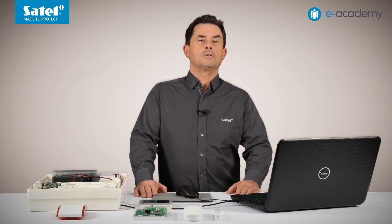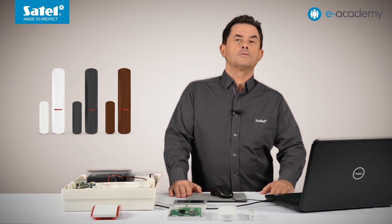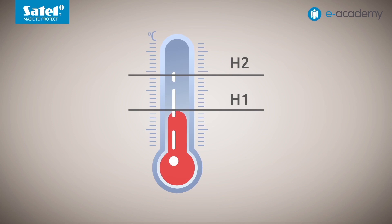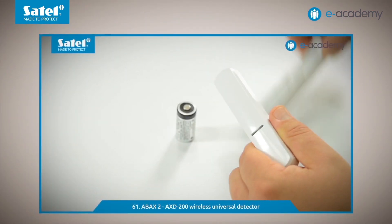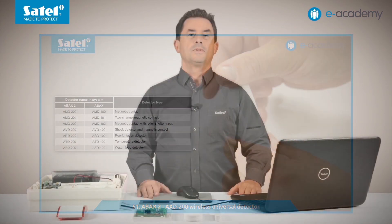Besides ADD-200, the AXD200 wireless multipurpose detector is another device working within the ABAX2 system that can act as a temperature detector. The AXD200 detector has one advantage over the ADD-200: we can program two thresholds. For example, when the first temperature threshold is exceeded, the control panel can activate the chosen output, whereas when the second threshold is exceeded, the alarm can be triggered. We talked more extensively about the AXD200 detector in episode 61.